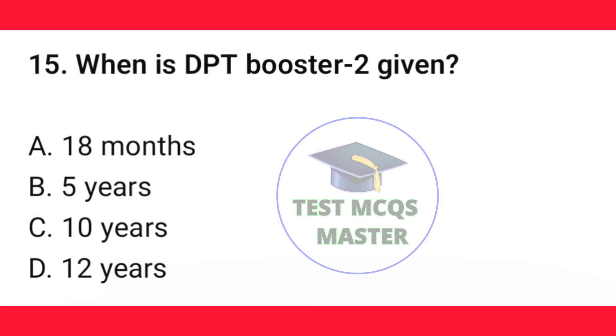Question number 15. When is DPT booster 2 given? The correct option is B — five years.